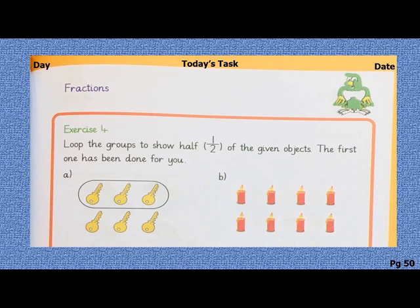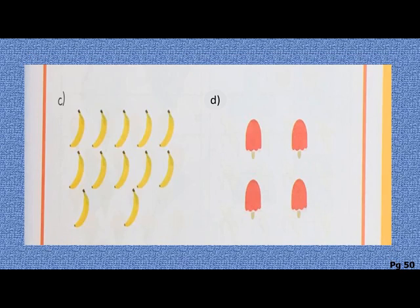The first one has been done for you. Likewise, you have to do the rest of the questions. Now you have to tell me what will be the half of eight. Yes, the half of eight is four, so you have to encircle four candles. Now let's move towards C part. They have given you 12 bananas, so can you tell me what will be the half of 12? Yes, it will be six, so encircle six bananas.